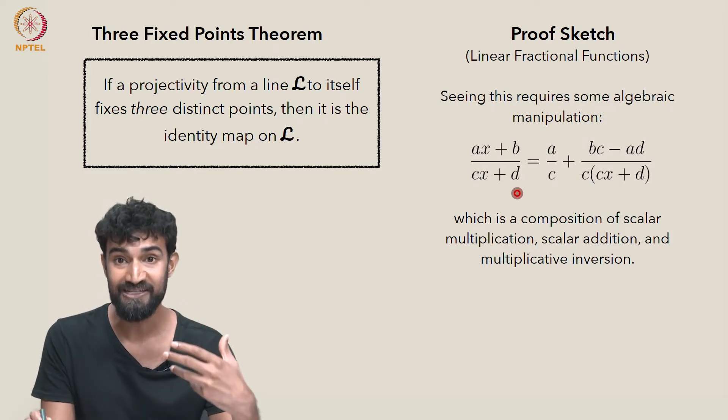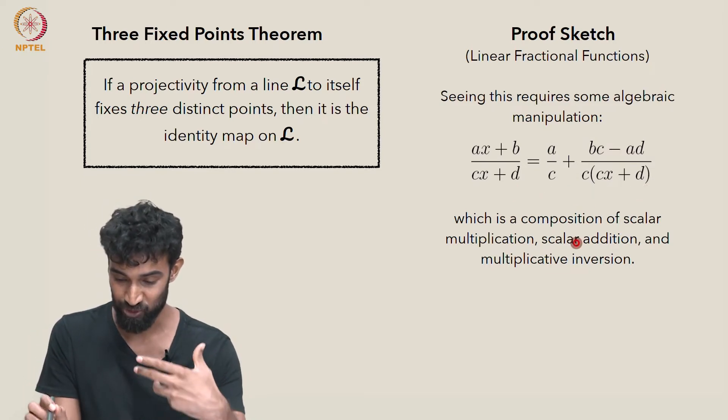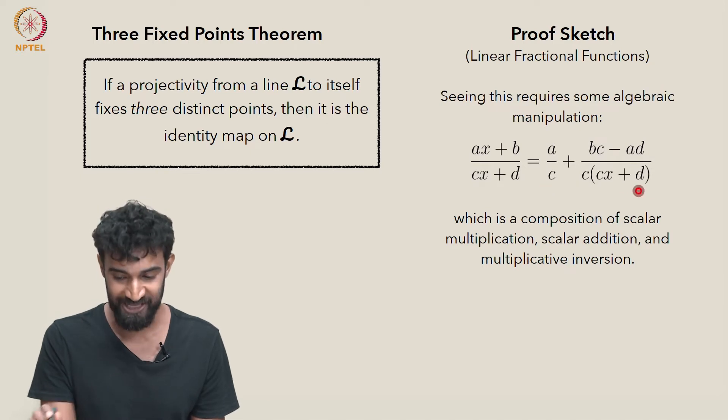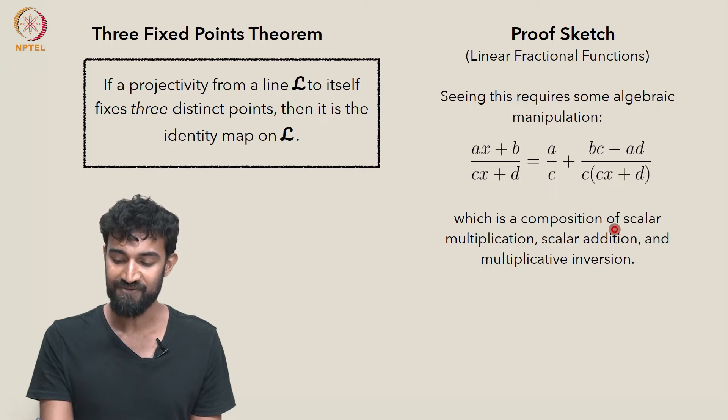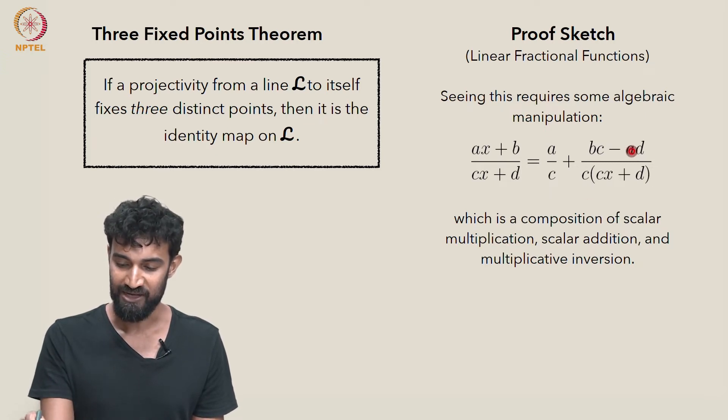But the reason that this right hand side formulation is better, is more useful, is more illuminating, is that this is clearly a composition of scalar multiplication, right? We're multiplying x by c, and scalar addition. We're adding cx to d. And finally, inversion.